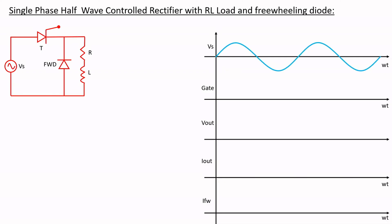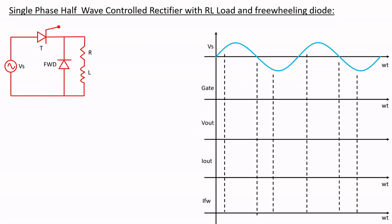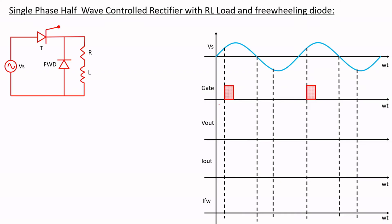Let us consider the waveforms and the operation in parallel so that it will be very clear to understand. We're going to consider a sinusoidal voltage source Vs equal to Vm sin(ωt). We're going to apply a gate pulse at instant alpha. So this is the instant at which we apply a gate pulse. Now what happens when we apply a gate pulse at this instant — what will be the output voltage and what will be the output current? These are what we have to observe carefully in any type of analysis, especially for rectifier circuits.